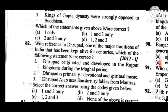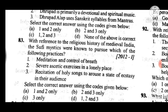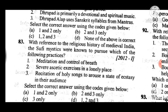Question 82: With reference to Dhrupad, one of the major traditions of India kept alive for centuries — which statements are correct? Answer is B — two and three statements are correct. Question 83: With reference to the religious history of medieval India, Sufi mystics were known to pursue — answer is D, one, two, and three; all the statements relating to Sufi practices are true.